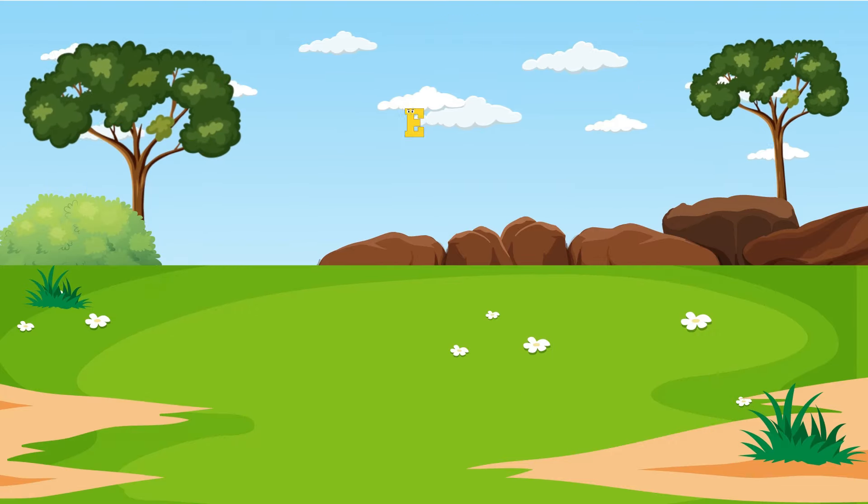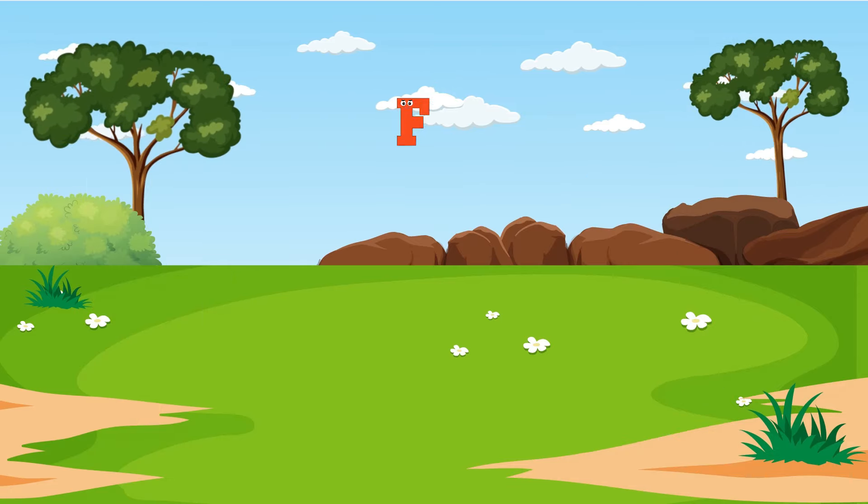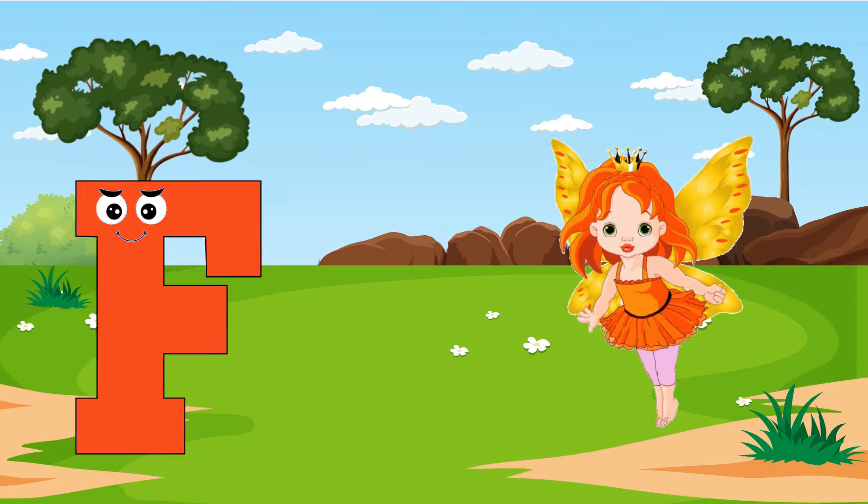Donut. E is for Elephant, E, E Elephant. F is for Fairy, F, F.